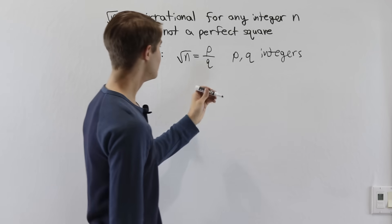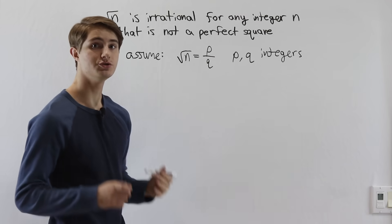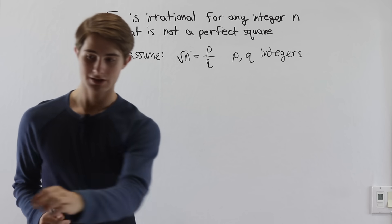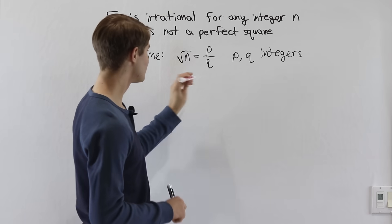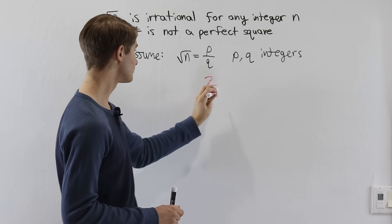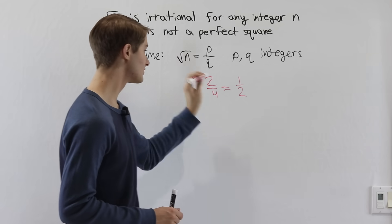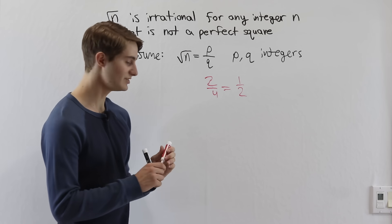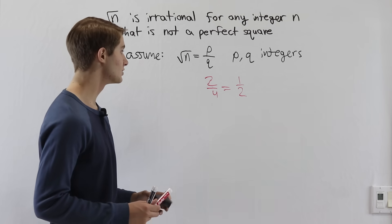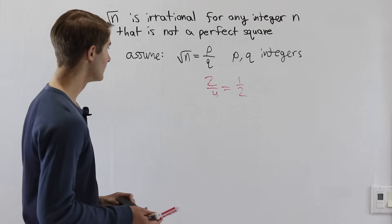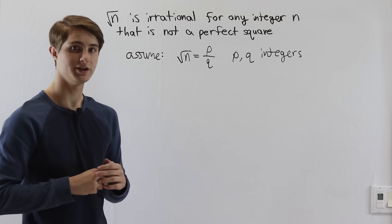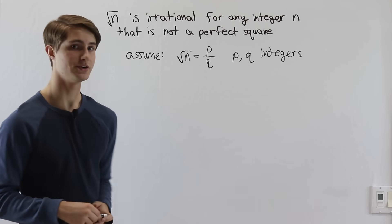We're also going to assume that this fraction is in reduced form. What that means is that this fraction is not going to be equal to something like 2 over 4, because if we had 2 over 4, we could take a 2 out of the top and bottom and just write it as a half instead. Now let's think about what it means for a fraction to be in reduced form. If this fraction is in reduced form, that means we can write both the numerator and the denominator as a product of prime factors.